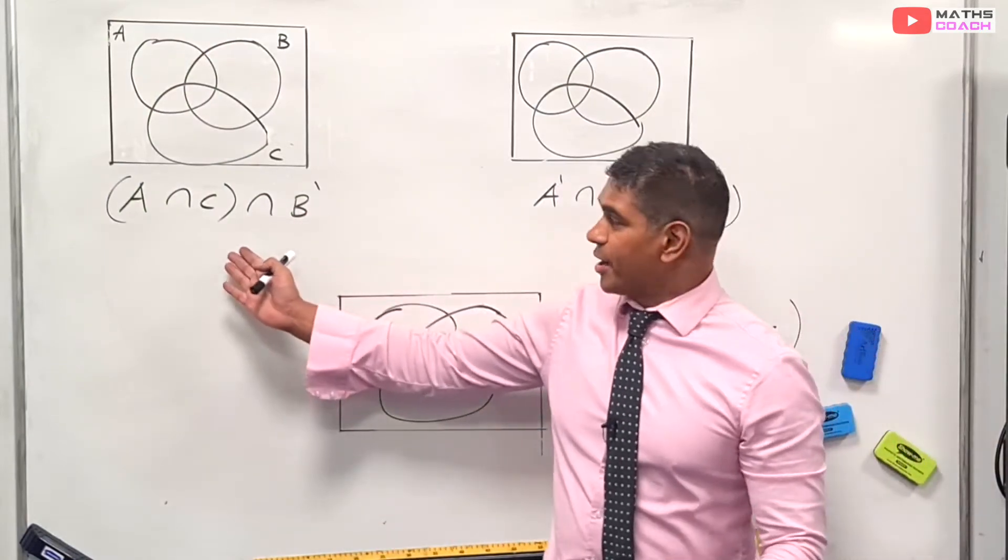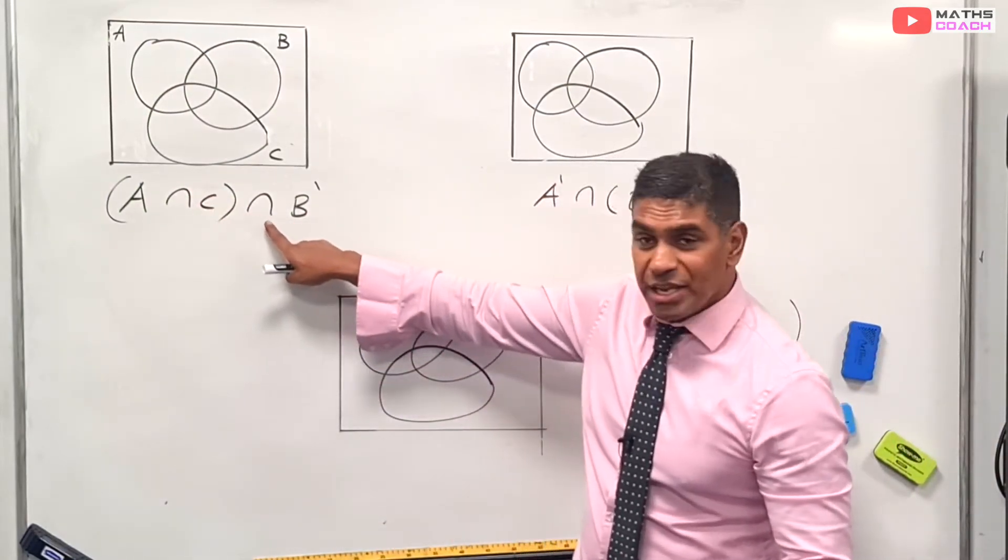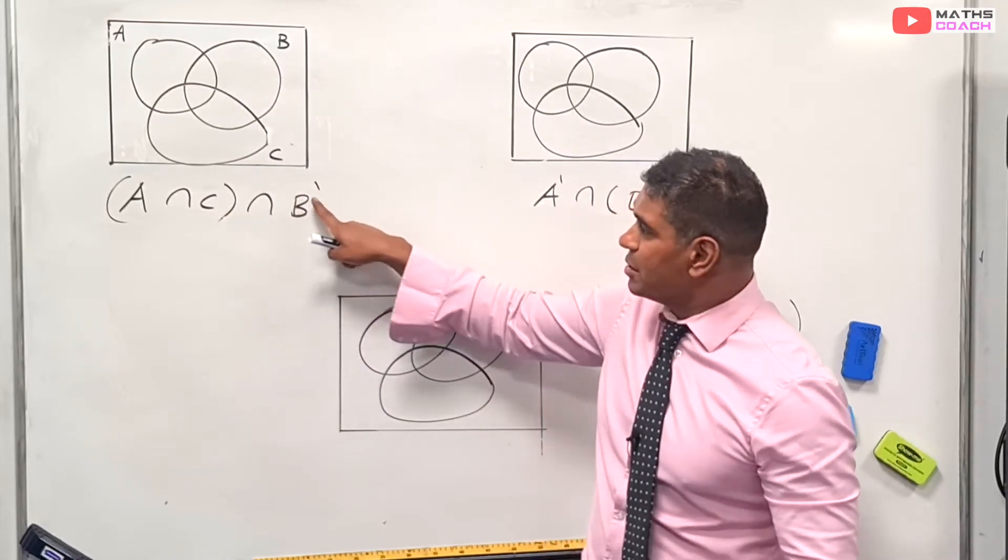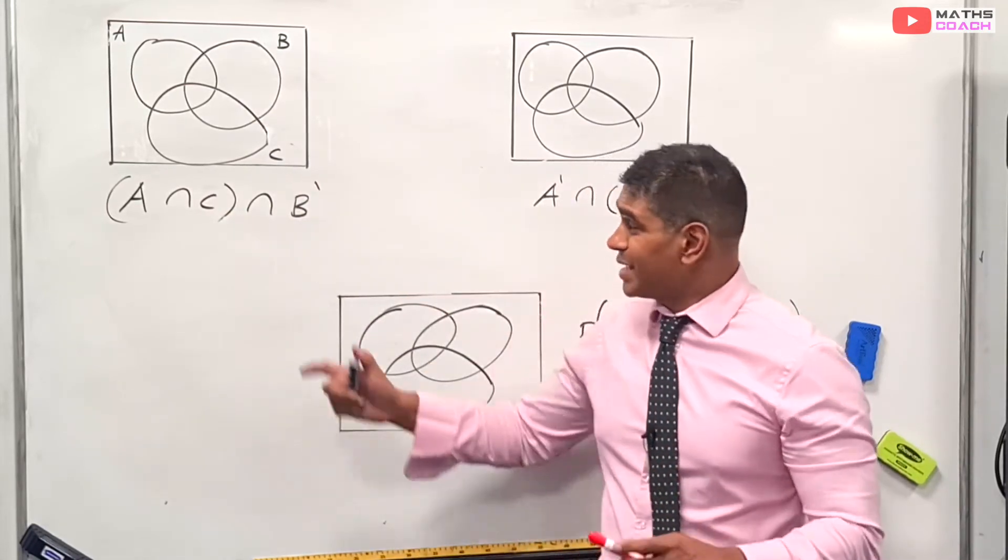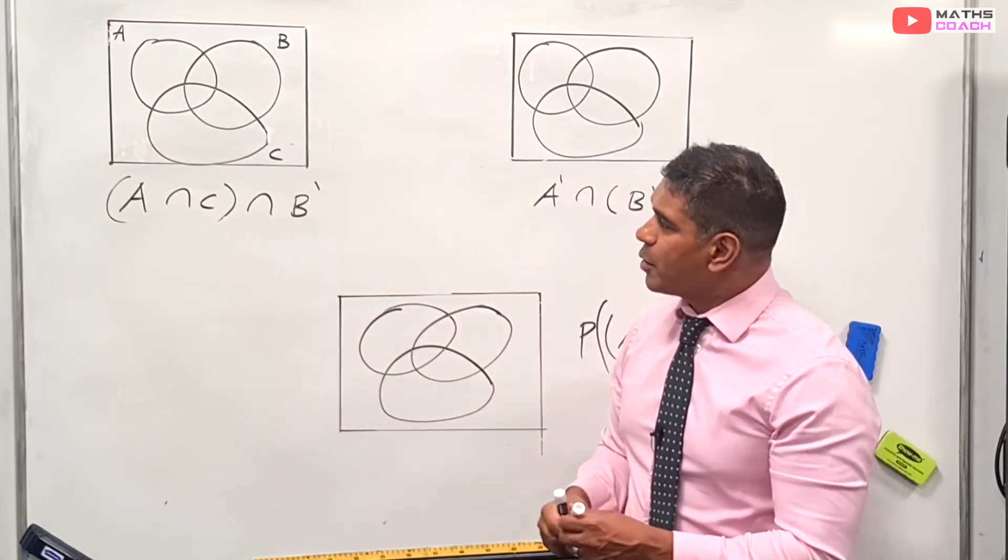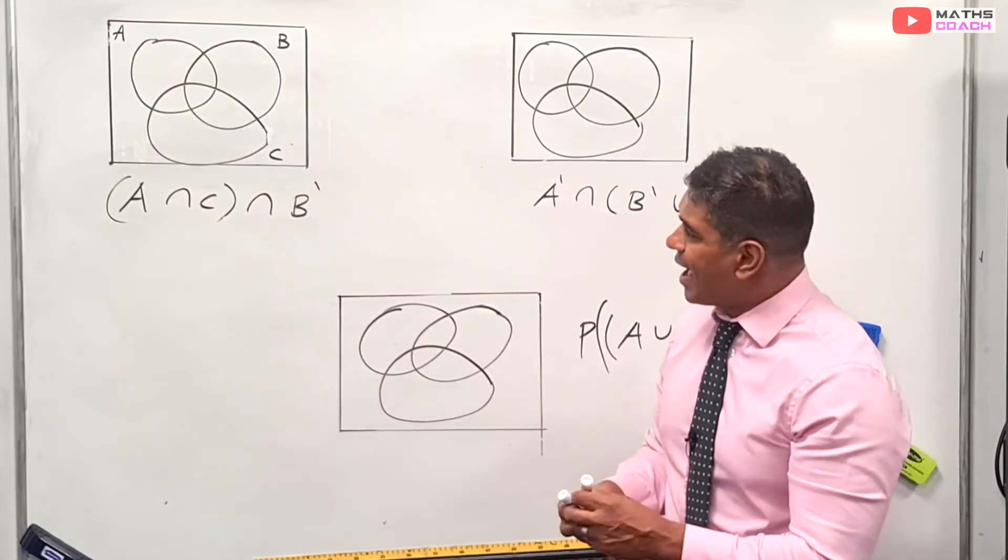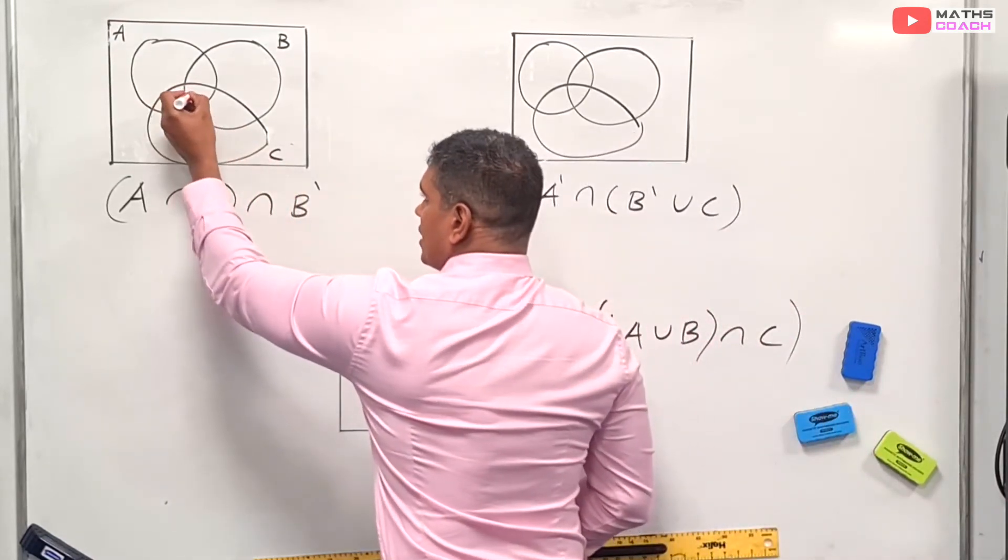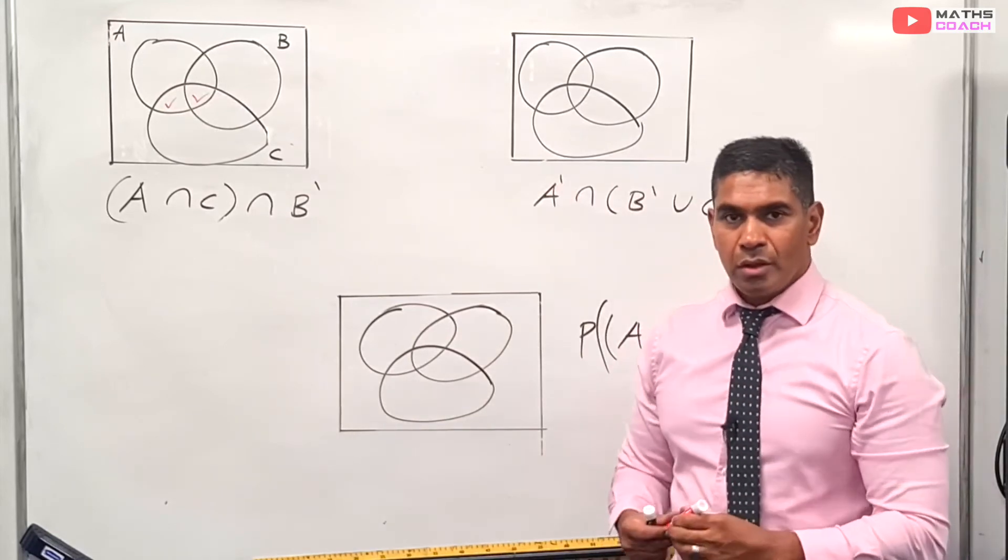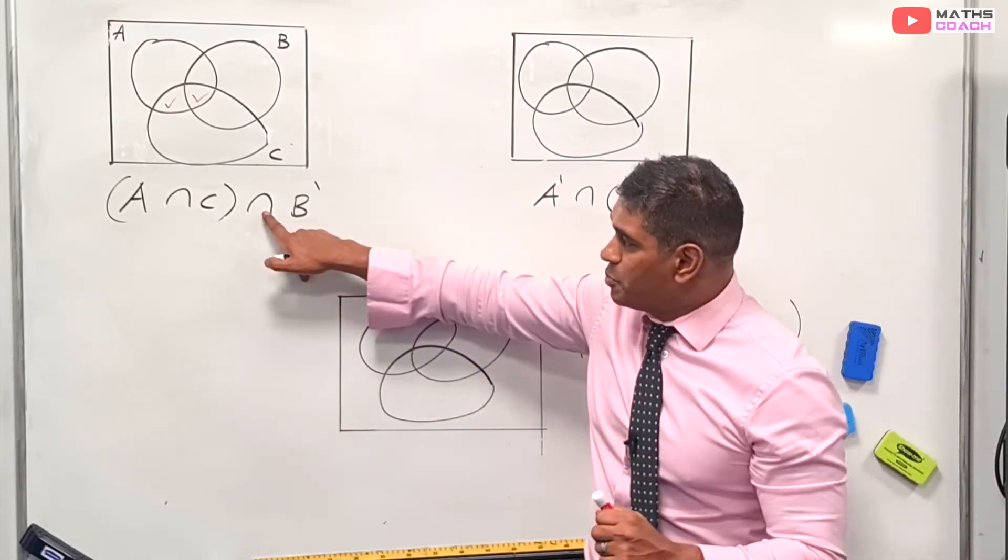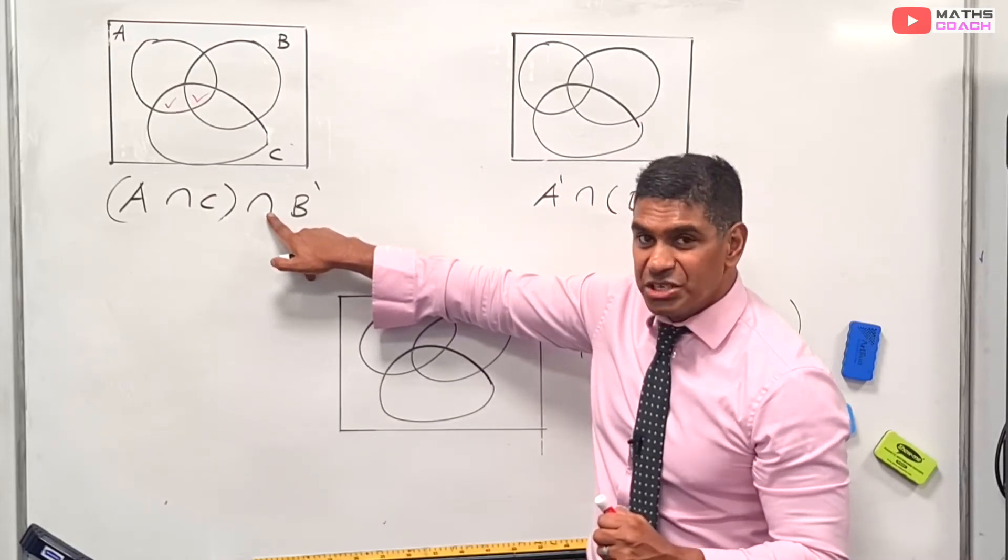So we're going to look at our next diagram, and our next notation, which is A∩C in brackets, ∩ B'. Now you notice here, there is no union. So let's think about what we do first. Let's look at the brackets, and we see A∩C. Well, we know A∩C are definitely going to be there. But this is the ∩. It's not a ∪, which means there's a condition there.